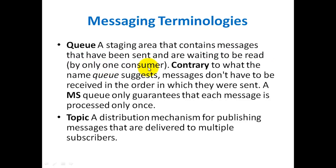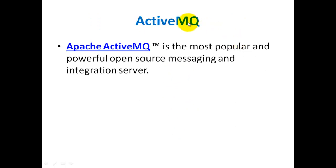The queue is a staging area that contains messages that have been sent and are waiting to be read by only one consumer. Contrary to what the name 'queue' might suggest — that messages will be received in the same order they were sent — in messaging systems, the queue only guarantees that each message is processed only once. Finally, the topic is a distribution mechanism for publishing messages that are delivered to multiple subscribers.